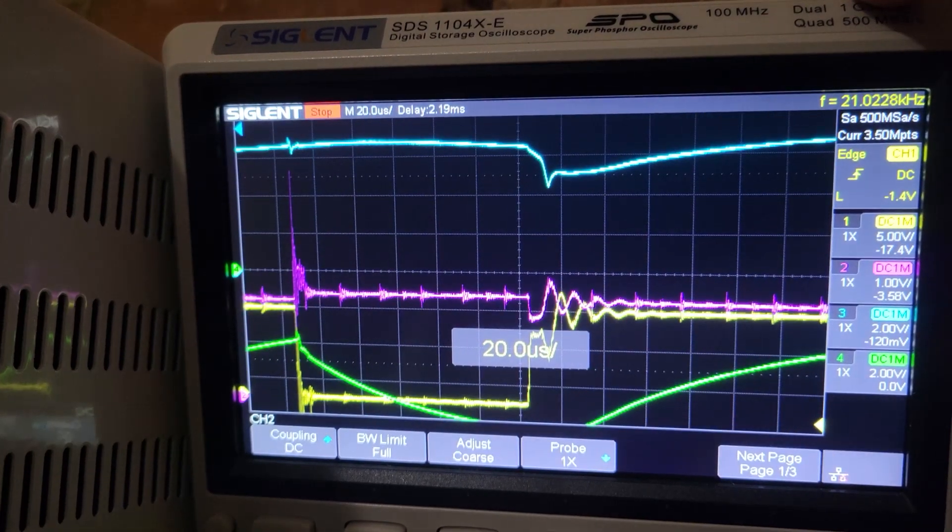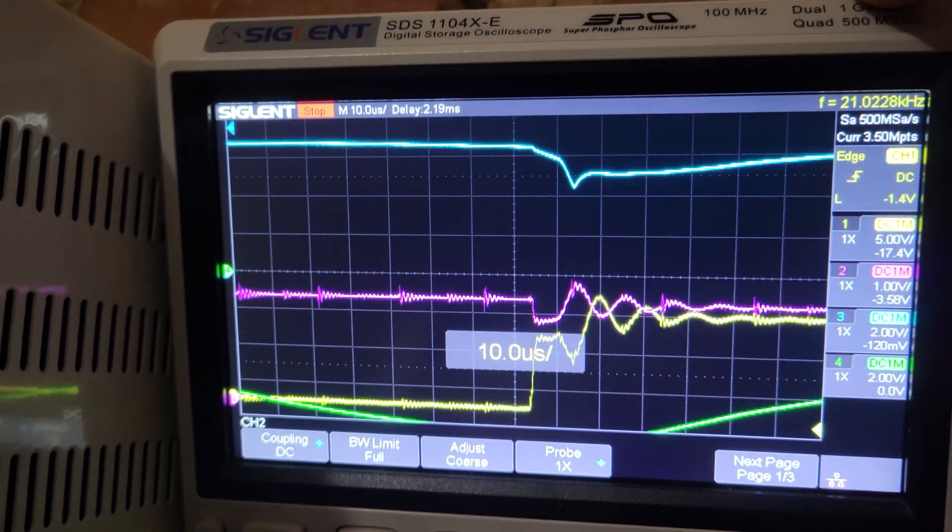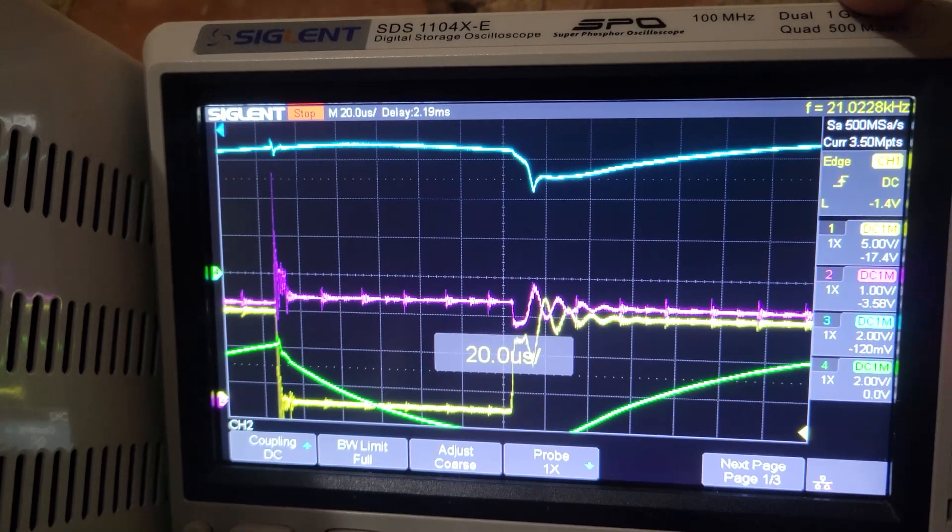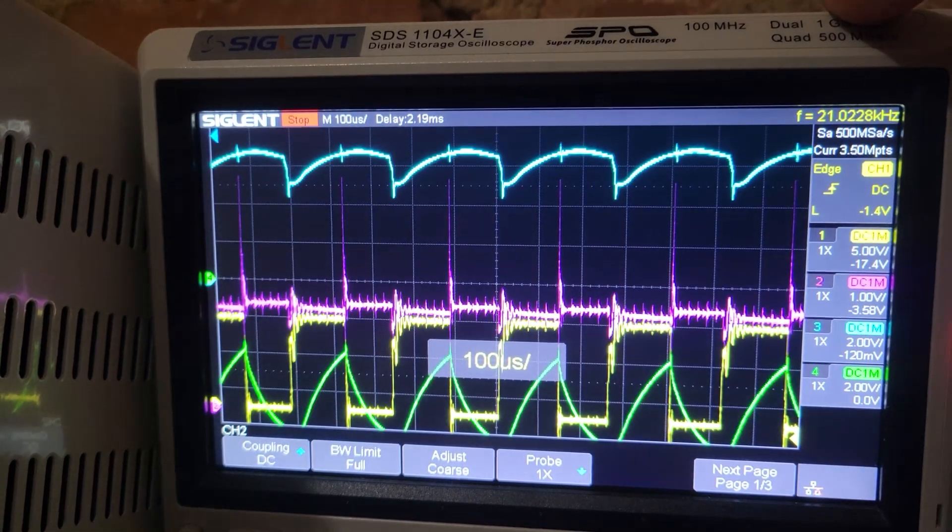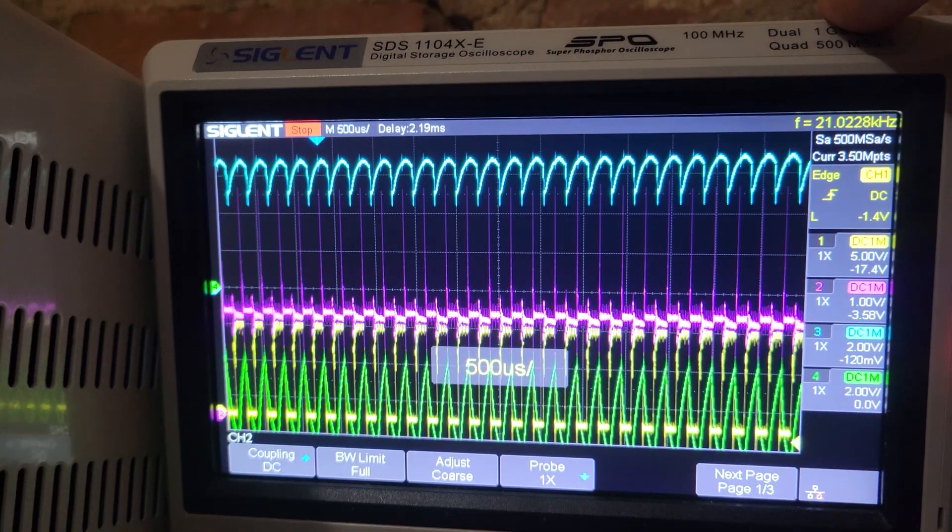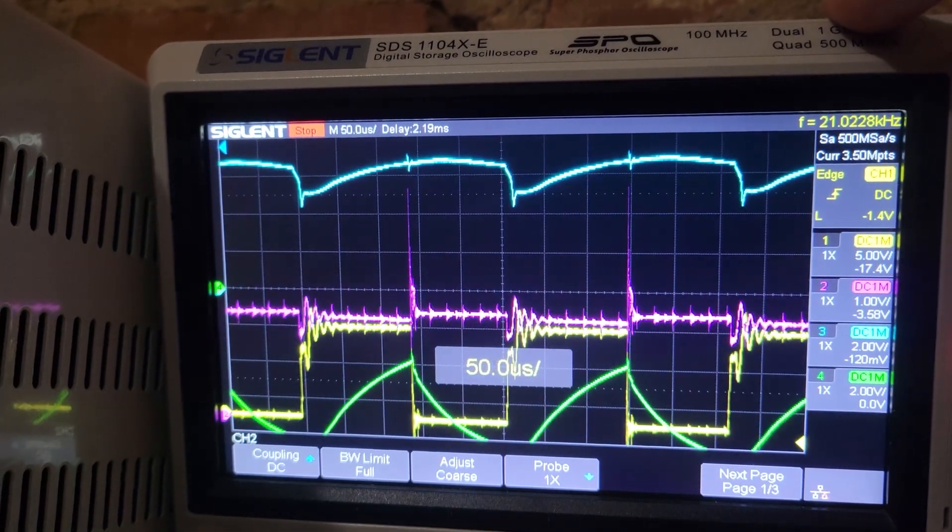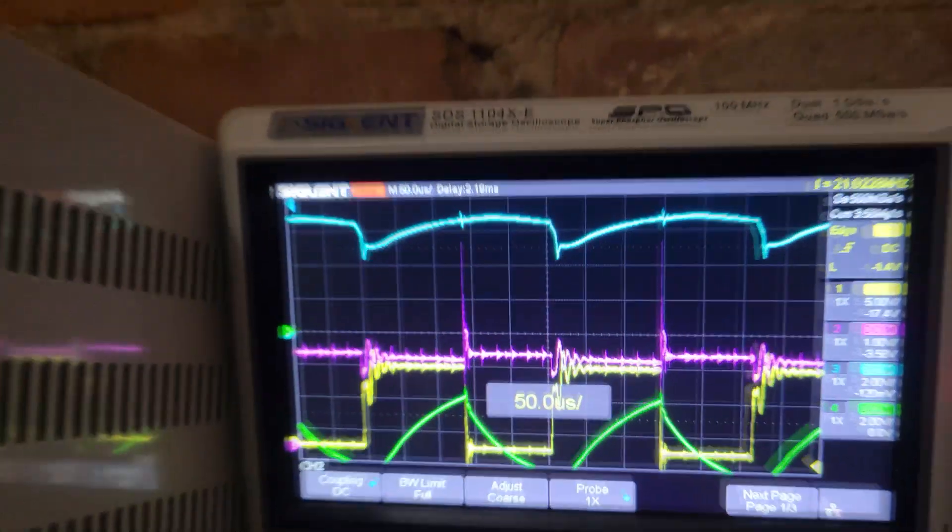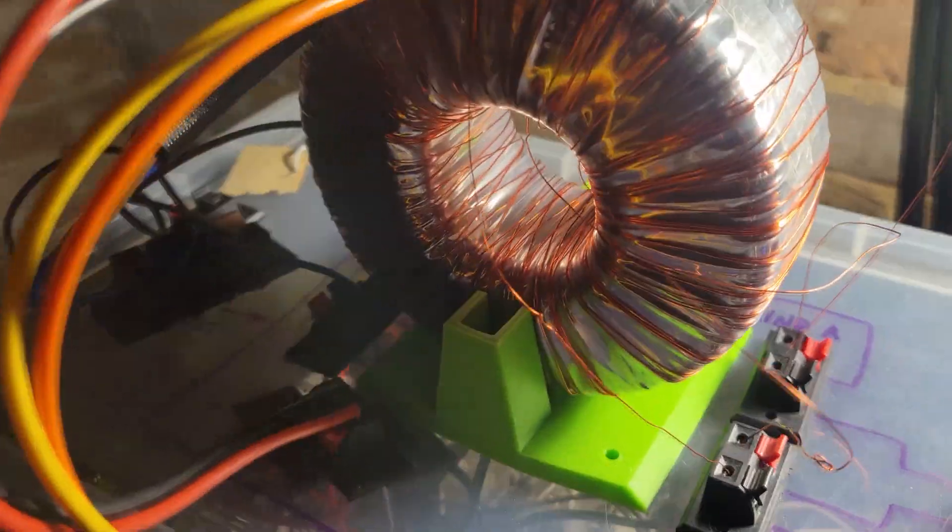Pretty interesting waveform. The yellow is our pulse on time, the purple is our 12 volt rail. Interesting spike there, but I get excellent production with this transformer.